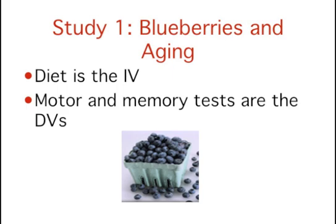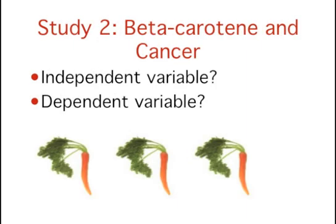Learning to identify independent and dependent variables is a difficult task, so let's do another example. Example 2: Does beta-carotene protect against cancer? Beta-carotene supplements had been thought to protect against cancer, but a study published in the Journal of the National Cancer Institute suggests that it does not. The study was conducted with 39,000 women aged 45 and up. These women were randomly assigned to receive a beta-carotene supplement or a placebo, and their health was studied over time. There was no evidence that taking the beta-carotene supplement affected their cancer rates. What is the independent variable, and what is the dependent variable?